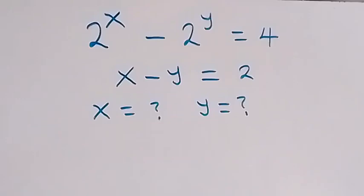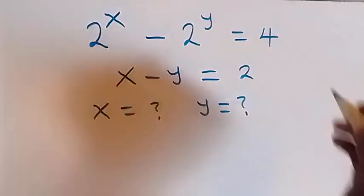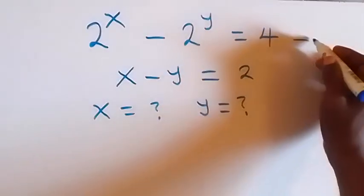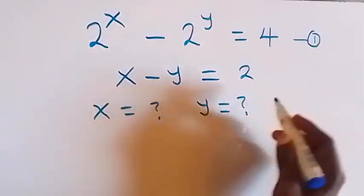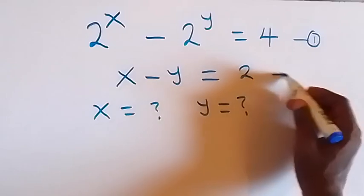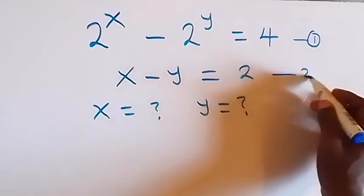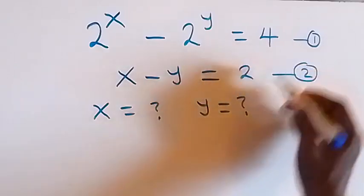Hello, you are welcome. How to solve this nice system of equations. We have 2 raised to power x minus 2 raised to power y equals to 4 — that is equation 1. And we have x minus y equals to 2, and this is equation 2.